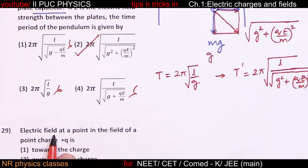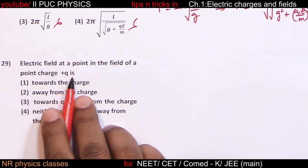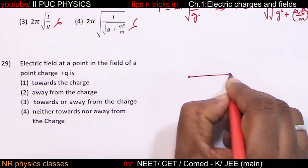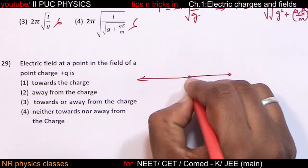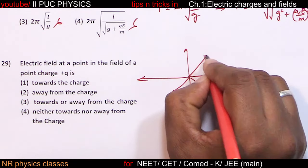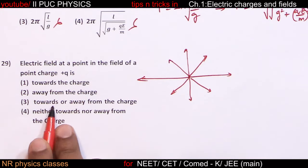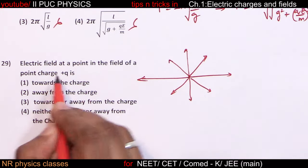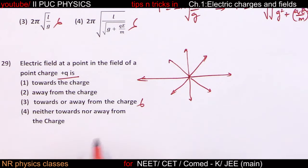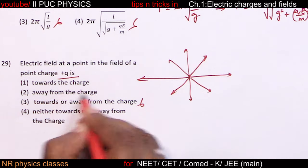The electric field at a point in the field of a positive point charge is directed radially outward — away from the charge.